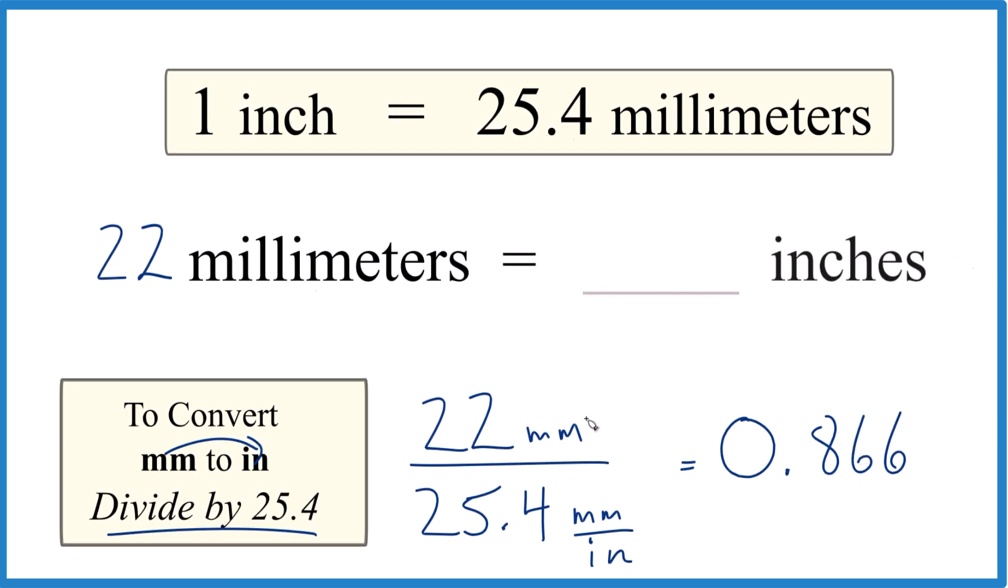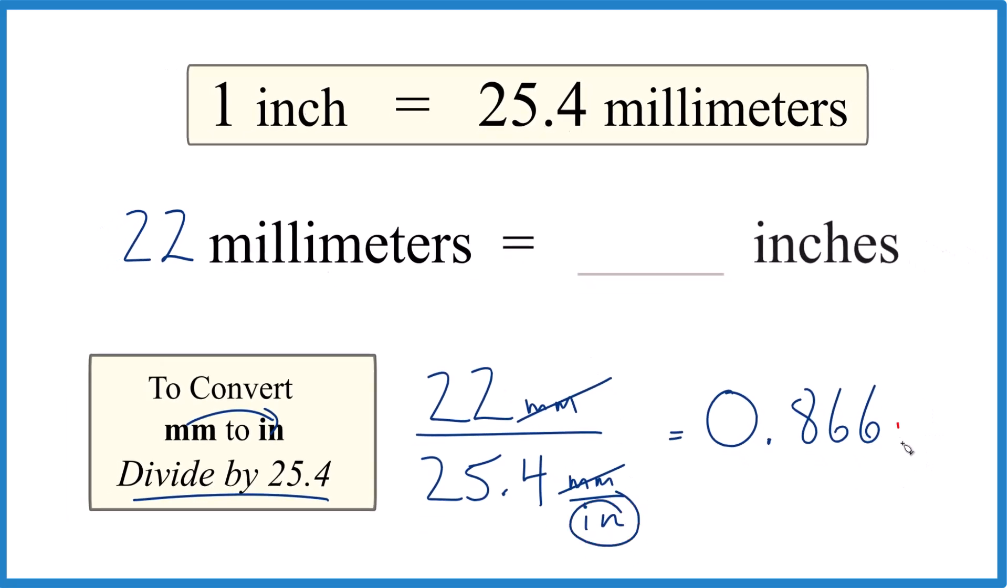We have millimeters on top and the bottom, they cancel out, and we're left with inches. So 22 millimeters equals 0.866 inches.